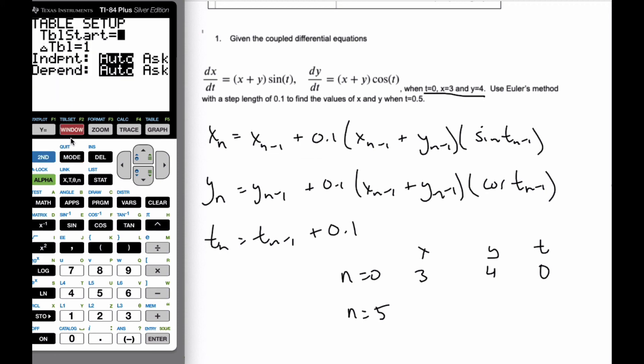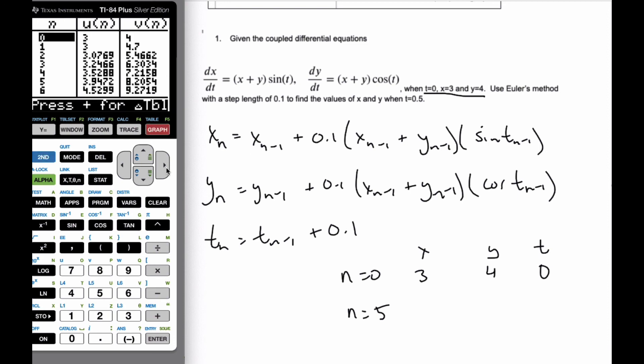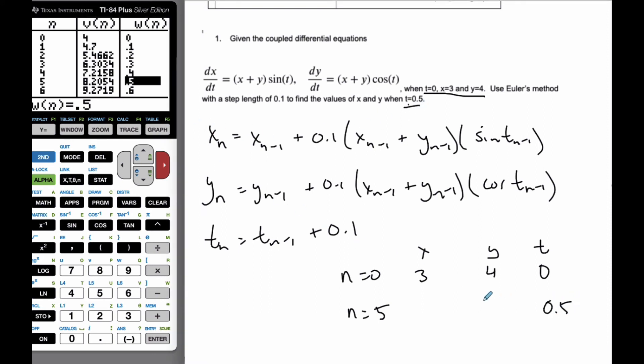And I'll check my table set. I'm going to start at 0 and I'm going to go by 1s. I go to my table set. And I can see I'm looking for when it is 5. 0.5 is the value I'm looking for. 0.5. And so 0.5, the y value is 8.21. And the x value is 3.95.